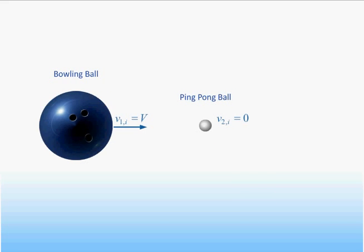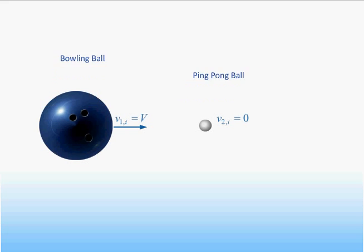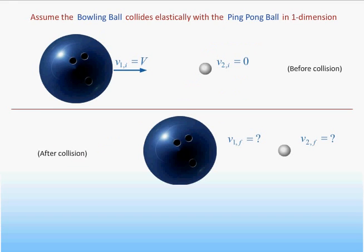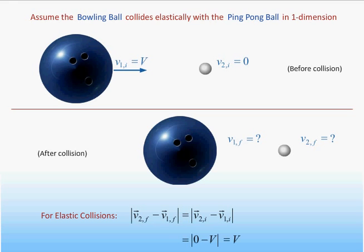Here we see a bowling ball moving with speed v colliding head-on with a ping-pong ball that is initially at rest. If we assume the collision to be elastic and the motion to be constrained in one dimension, what will be the final velocities of the balls? We just learned that if the collision is elastic, the speed of the ping-pong ball relative to the bowling ball must be the same after the collision as it was before. Before the collision, the speed of the ping-pong ball relative to the bowling ball was just equal to v. Therefore, the speed of the ping-pong ball relative to the bowling ball after the collision must also be equal to v.